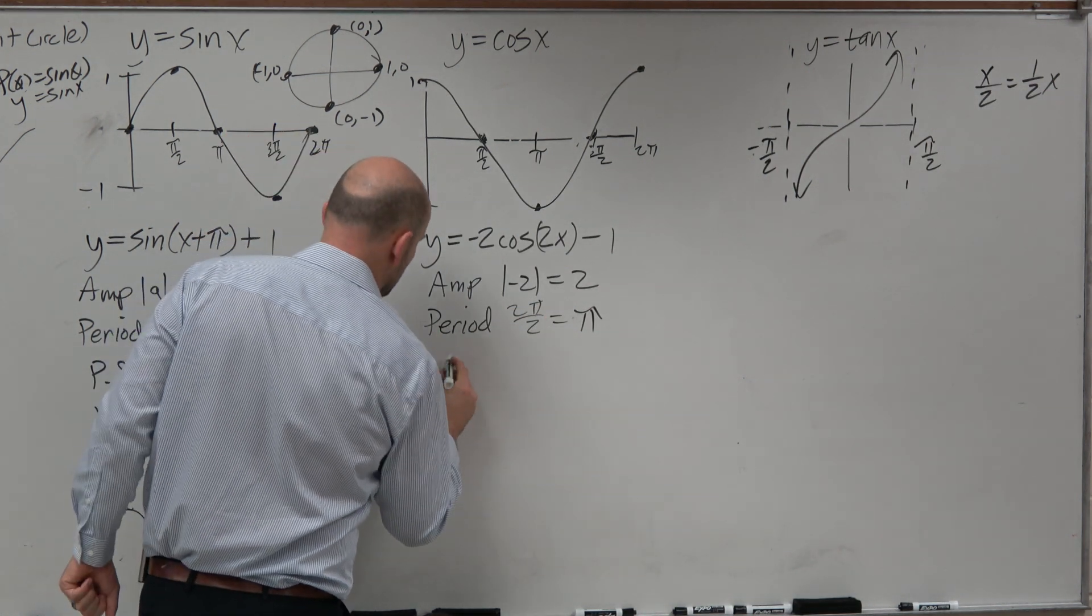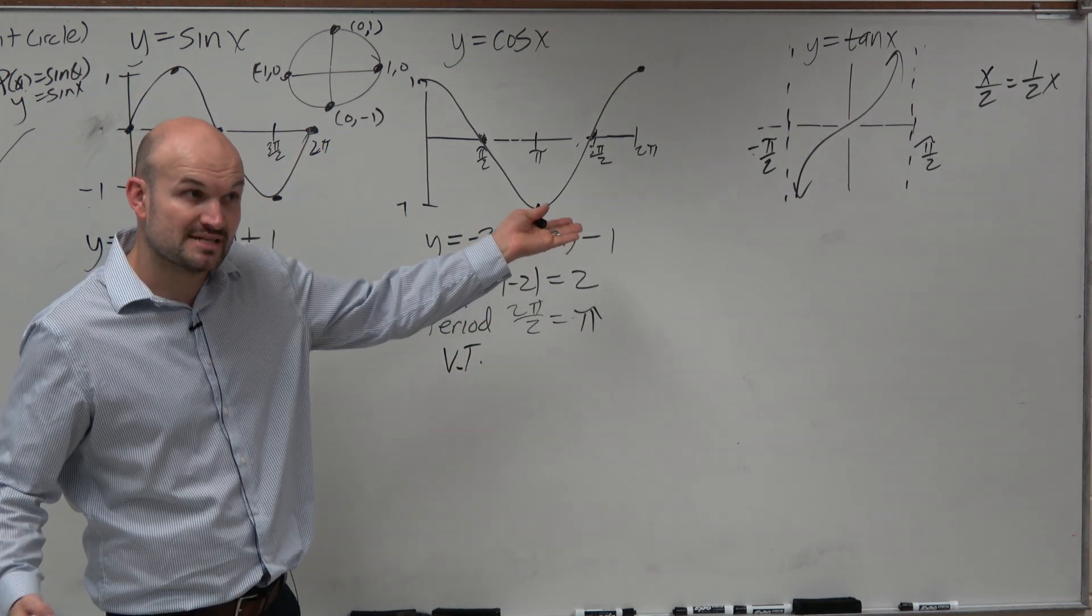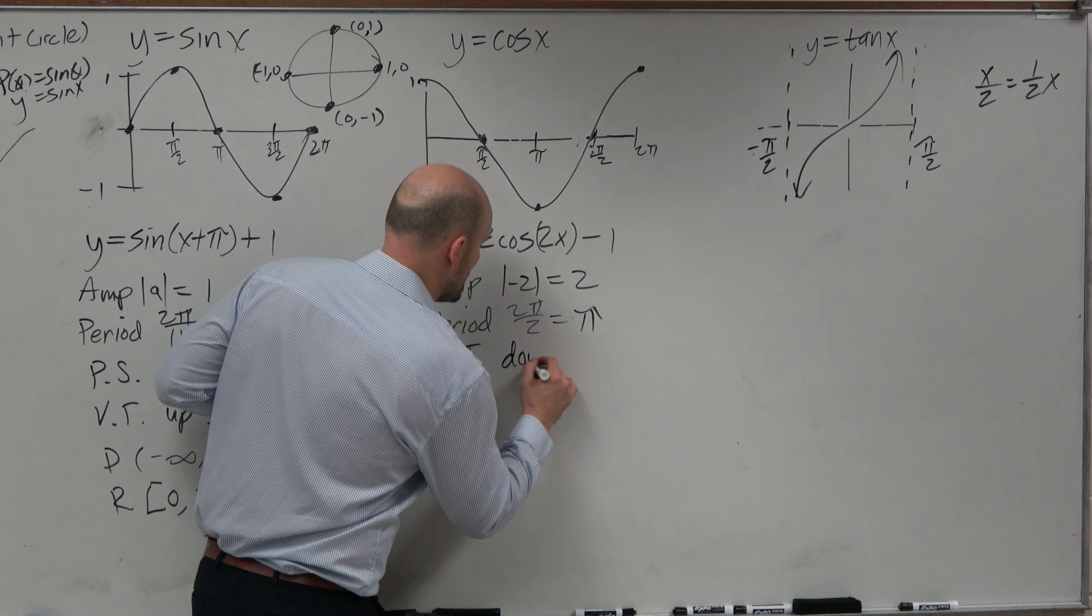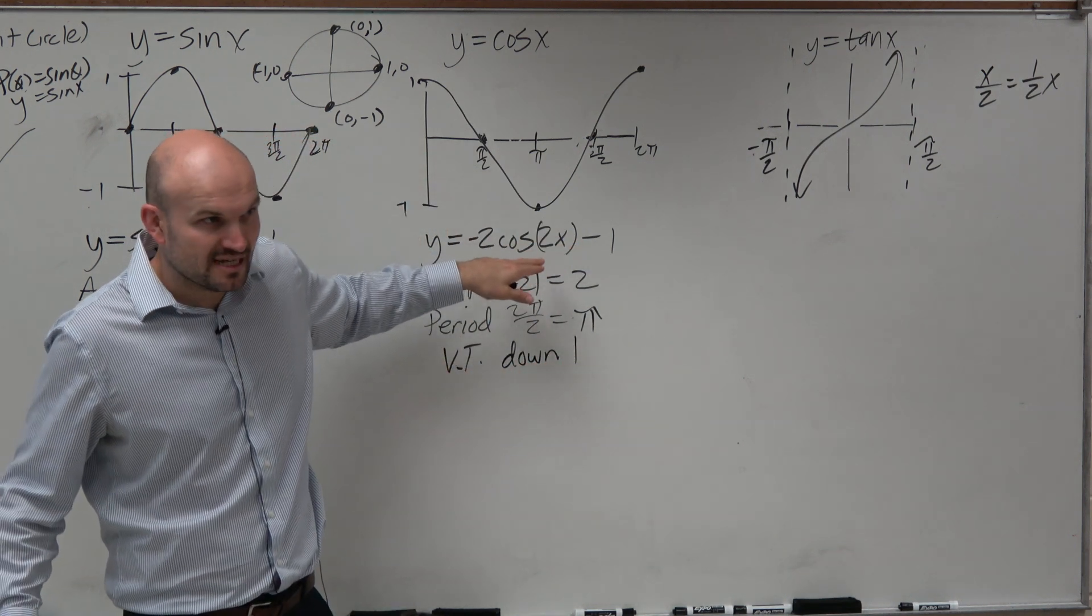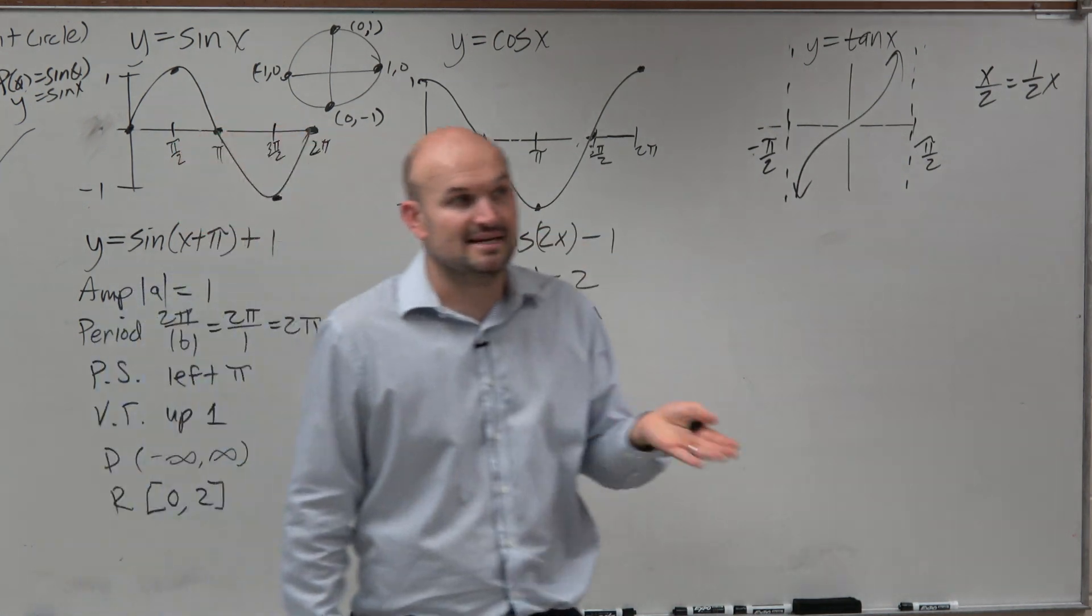Let's do the vertical transformation. Vertical transformation. You can see I'm subtracting 1 on the outside. So therefore, that's going to be down 1. Right? That's not inside. If that was inside the parentheses, we would say there's a phase shift. But it's not. It's outside.